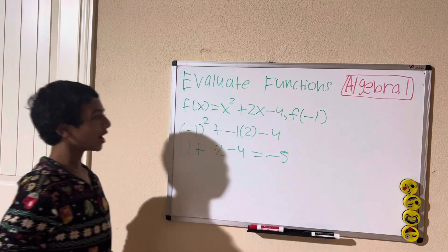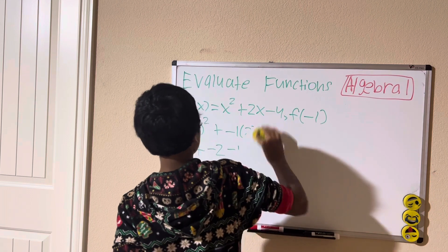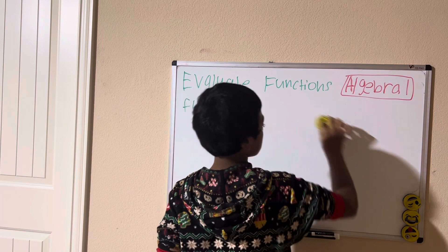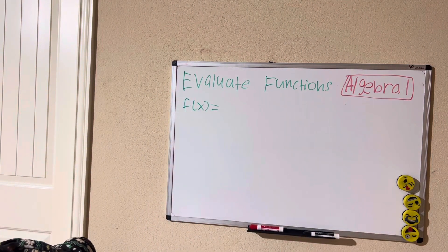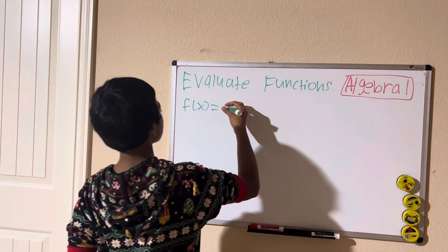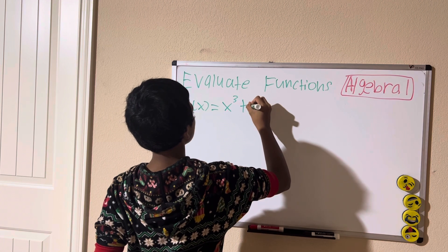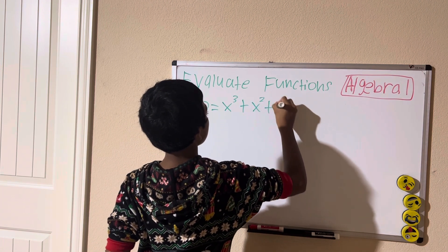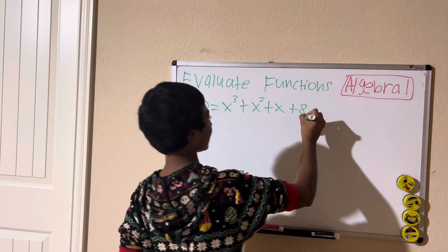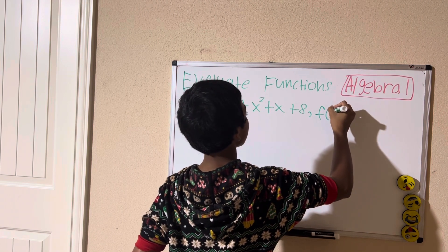Negative 5 is our answer for number 3. Now for the fourth problem, we have x cubed plus x squared plus x plus 8. Find f of let's say 2.